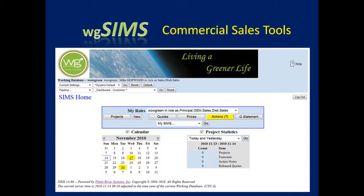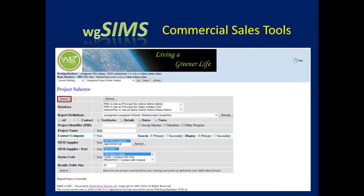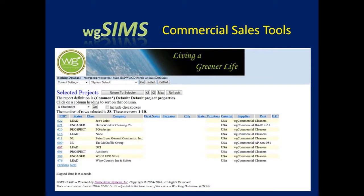When you log into Sims, you are presented with the homepage. To find projects in Sims, use the Projects button, which allows you to display projects. The easiest thing to do is click the Projects button, and when the Project Selector shows up, click Search. This is the simplest way to get to your projects immediately.